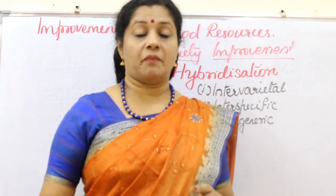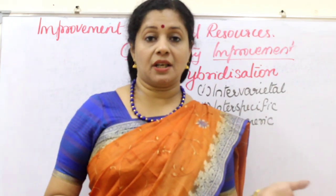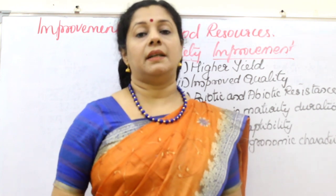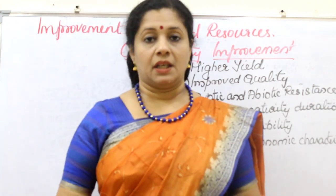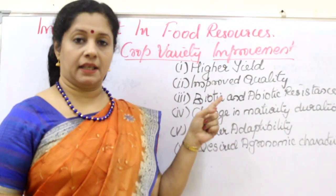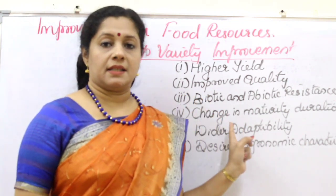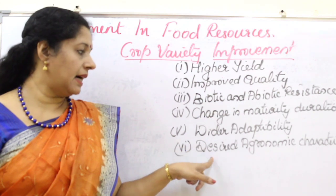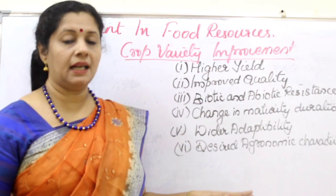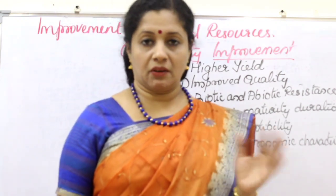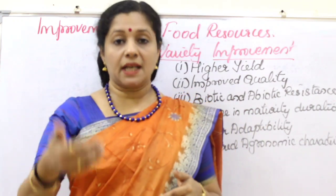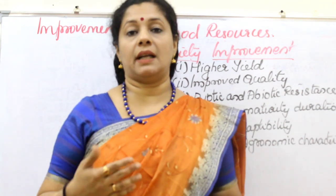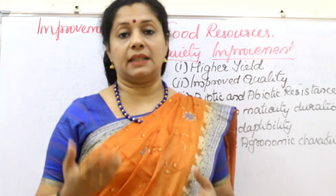Now we will see what factors we want in the new plant when doing crop variety improvement, whether using hybridization or genetic modification. There are six factors: first is higher yield, then improved quality, resistance to stresses like biotic and abiotic, change in maturity duration, wider adaptability, and desired agronomic characteristics. Higher yield means a new variety should give more than the existing variety from the same area of land — for example, if getting 2 tons of grain from one acre, the new variety should give at least 2.5 tons.